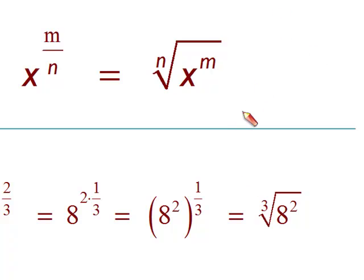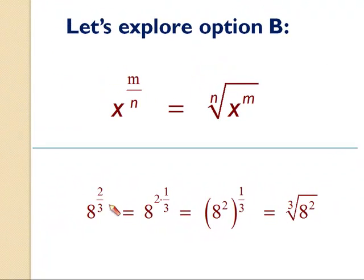Now let's look at option B. This time, I'm putting the two in front of the one-third. I'm doing two times one-third. In the previous example, I did one-third times two. So when I break this apart into two times one-third, this becomes 8 raised to the second in parentheses, and the one-third is on the outside. Again, if I multiply the two times the one-third, I get two-thirds. So now I'm squaring the 8, and I'm taking the cube root of everything inside parentheses.